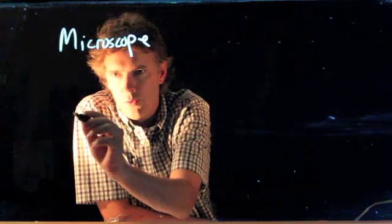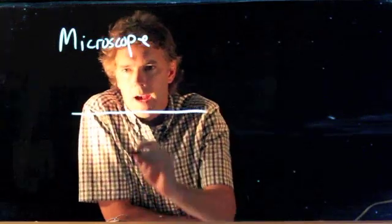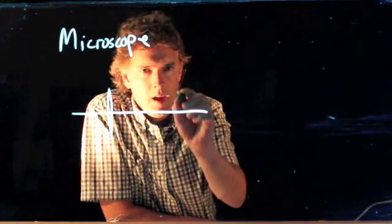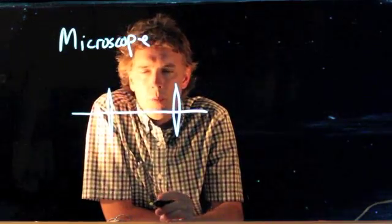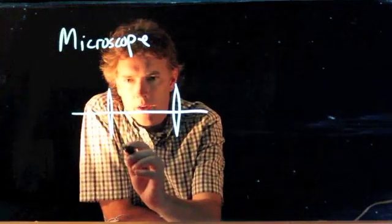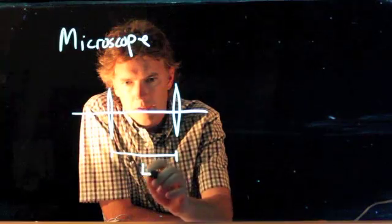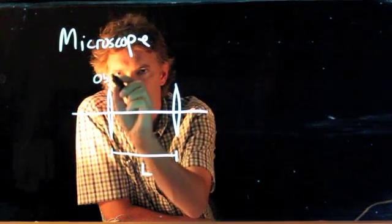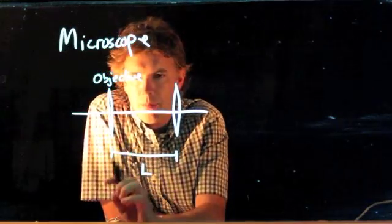As we said in class, the microscope is a two-lens system. So if this is our optical axis, and we put one lens right there, and a second lens right there, then we can make what's called a microscope. Now the distance between the lenses here is L. The focal length of this first lens, which we call the objective, is pretty short compared to L.